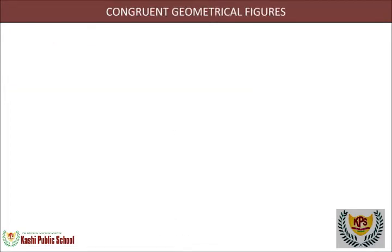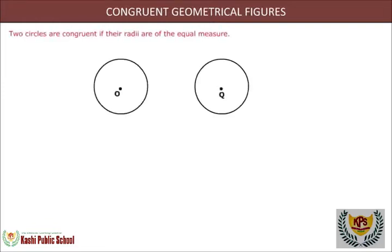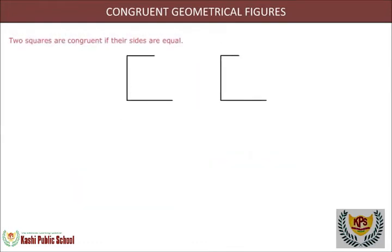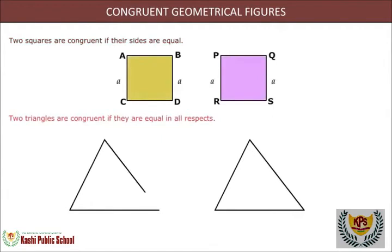Congruent geometrical figures: Two circles are congruent if their radii are of equal measure. Two rectangles of the same length and same breadth are congruent. Two squares are congruent if their sides are equal. Two triangles are congruent if they are equal in all respects.